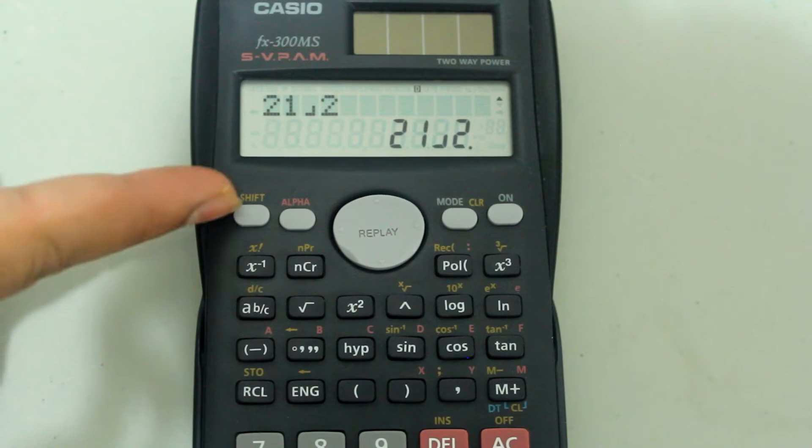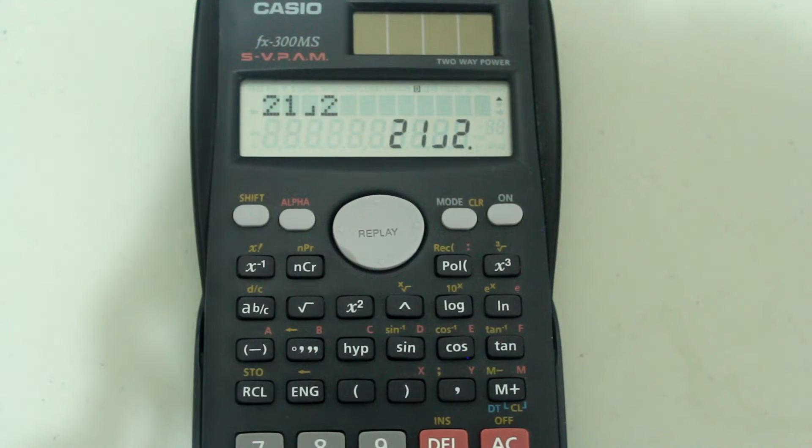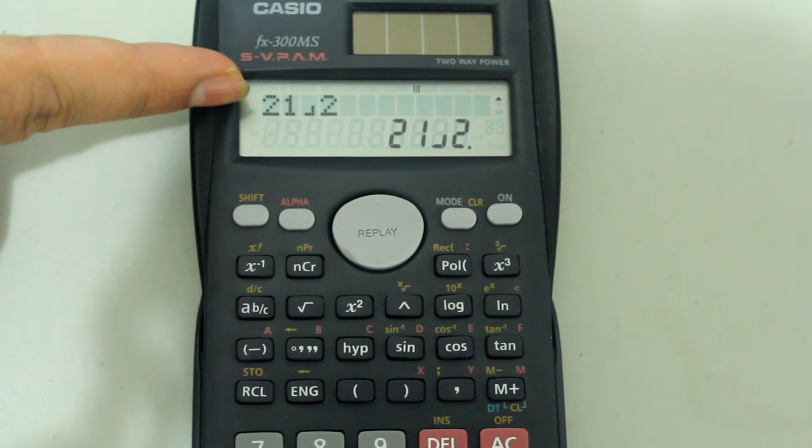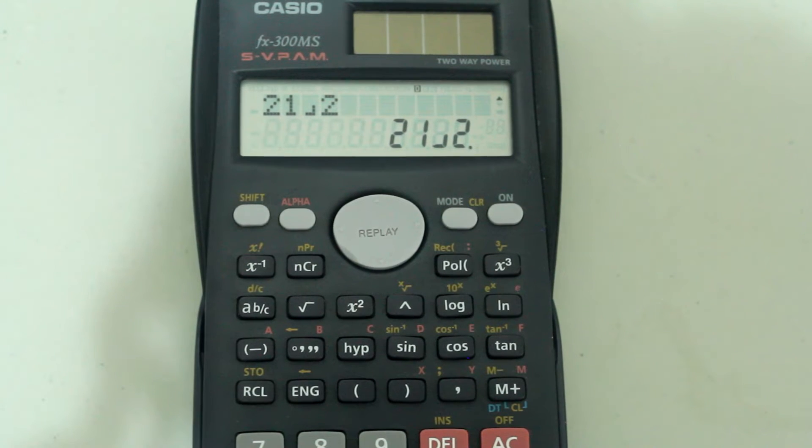You don't need to press the shift and this button when you're entering an improper fraction like I did here. You only need to press it if you want one of your answers to be converted to an improper fraction.